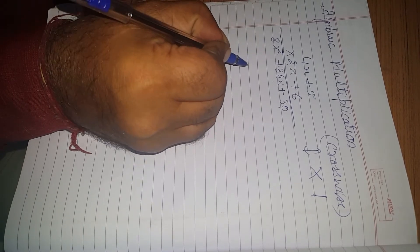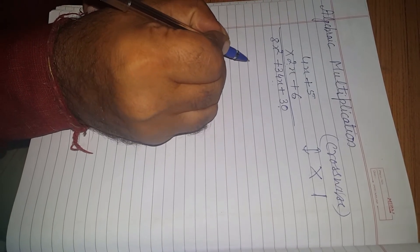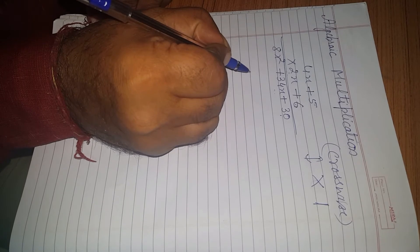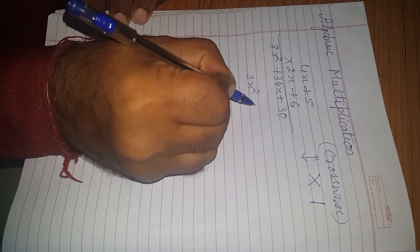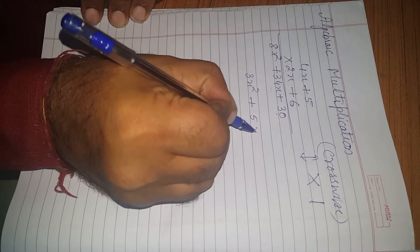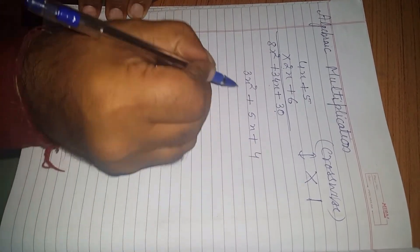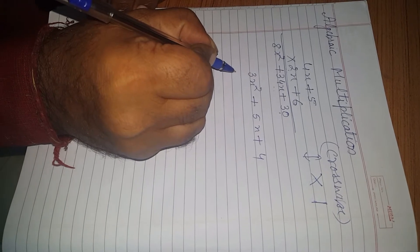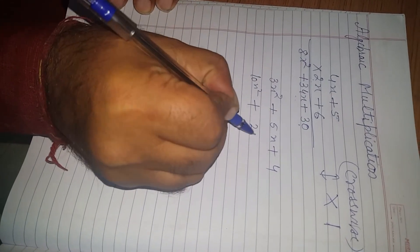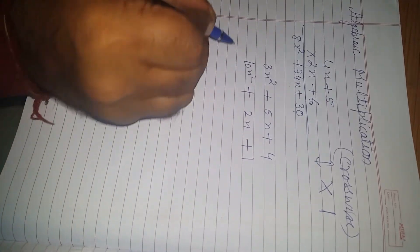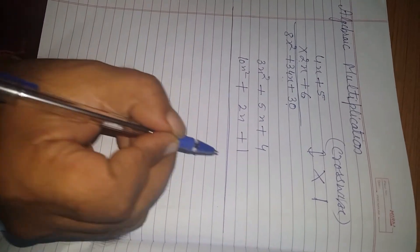We take an example of a quadratic polynomial. Suppose, 3x square plus 5x plus 4, and 10x square plus 2x plus 1. So, how we can do this?